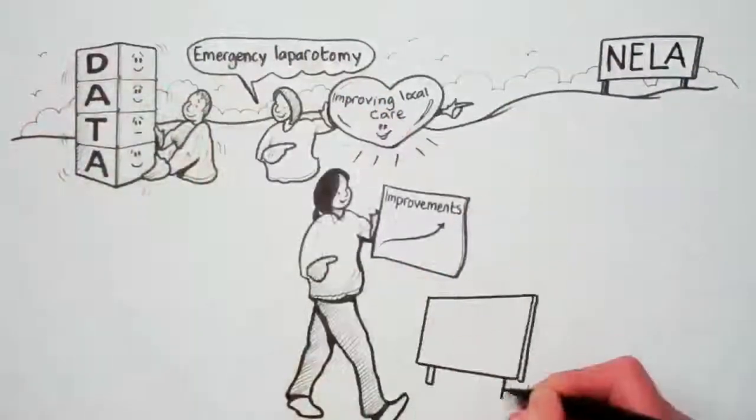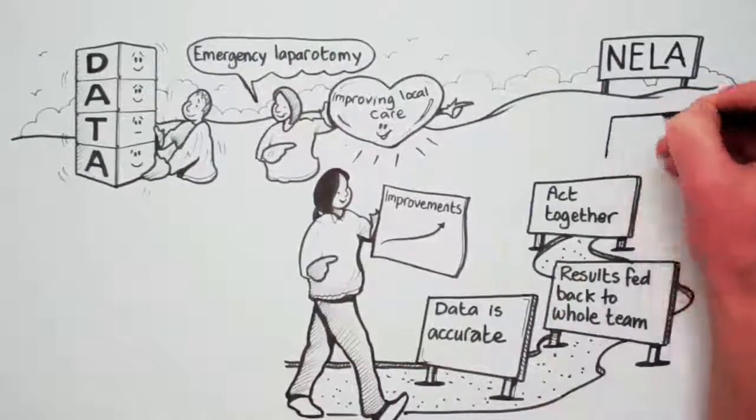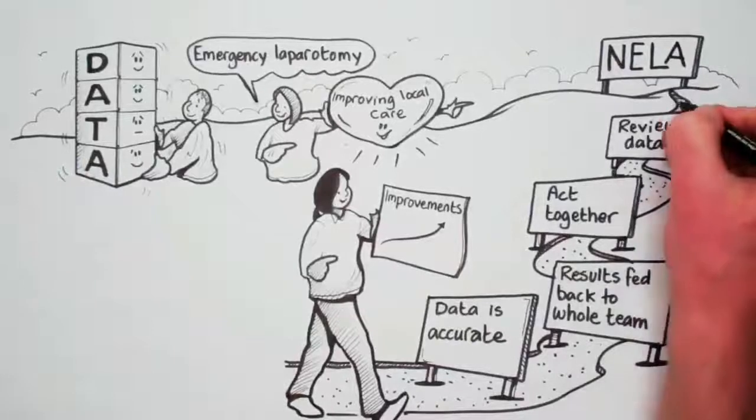Improvements happen when your data is accurate, results are fed back to the whole team regularly, and you act together if improvement is needed and review your data to check for improvement.